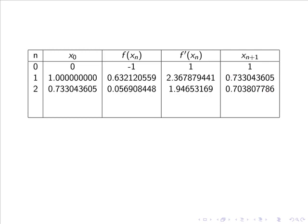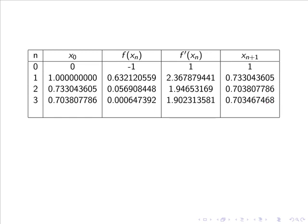So as you can notice we now have the root correct to 1 decimal place, 0.7. If we now do another iteration we get an answer of 0.703467468. Now you can see we have the root correct to 3 decimal places.